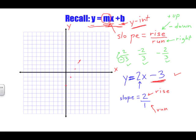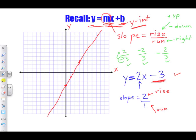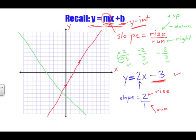Use a ruler when graphing — I wasn't able to use one on my tablet here, but always use a ruler. The intercept crosses at negative 3 and each point follows a rise of 2 over a run of 1. Today we are going to graph two lines and find where they intersect — that's the focus of today's lesson.